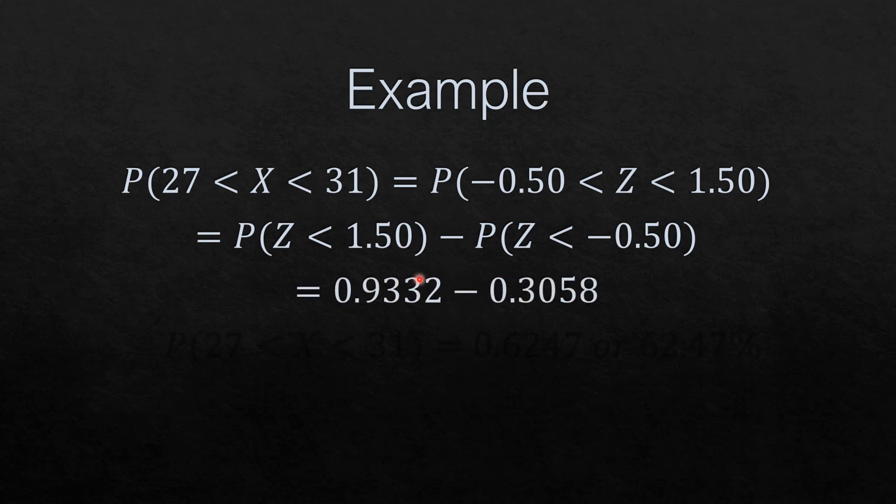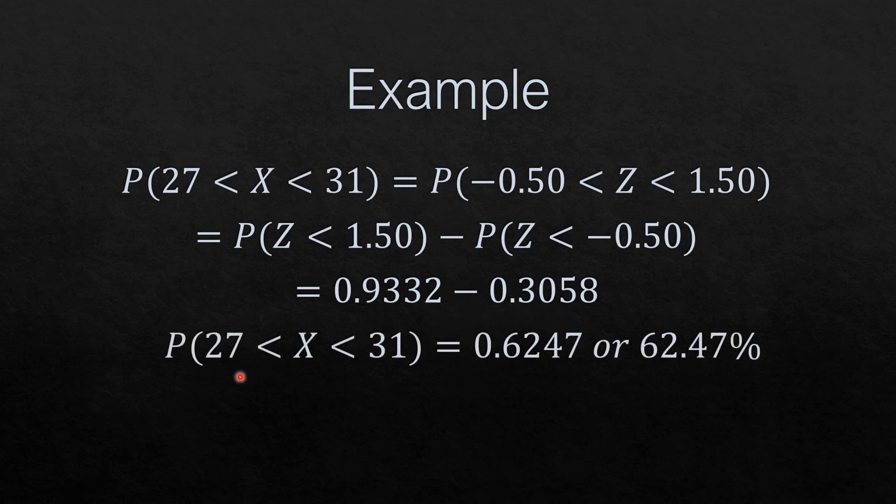Using the table, we have 0.9332 minus 0.3085, so the probability that X is greater than 27 but less than 31 is 0.6247 or 62.47%.